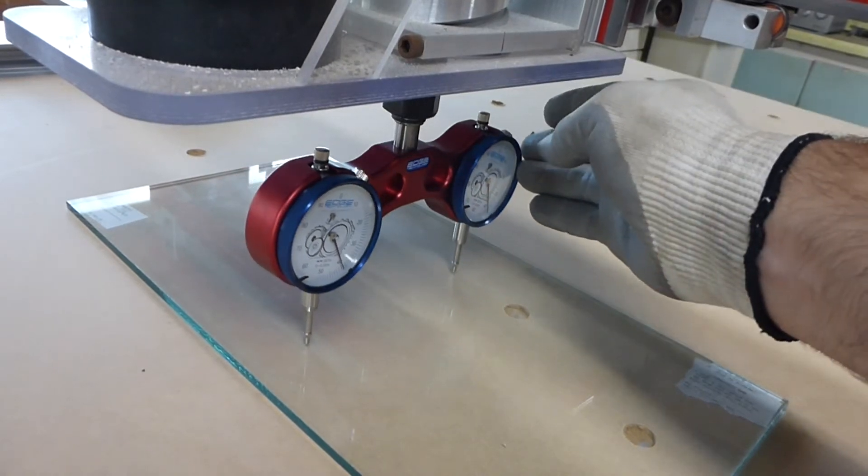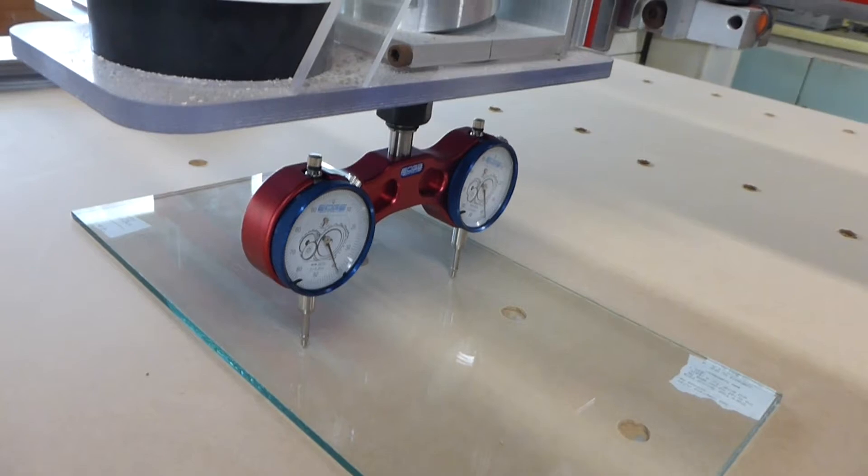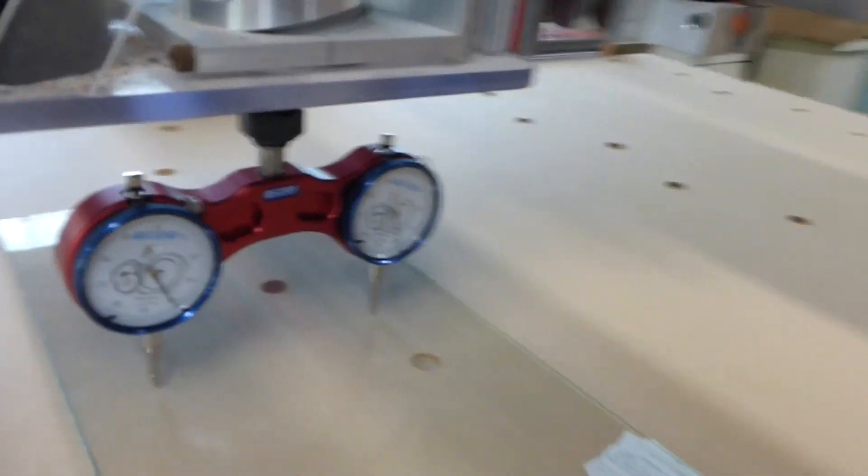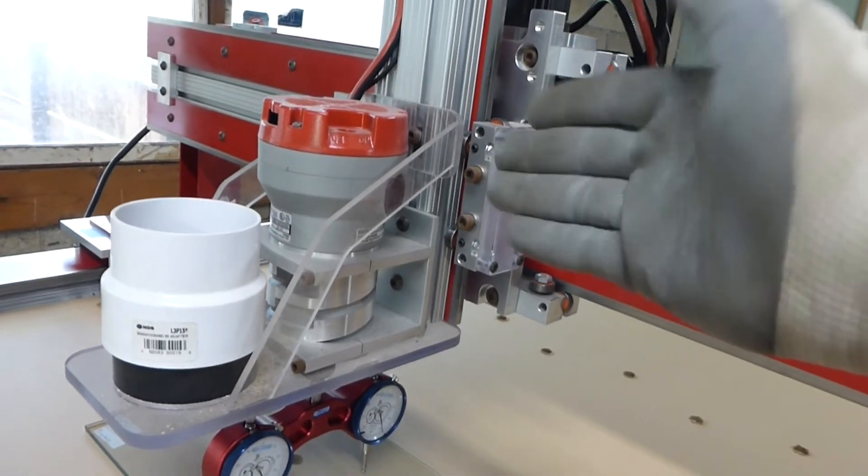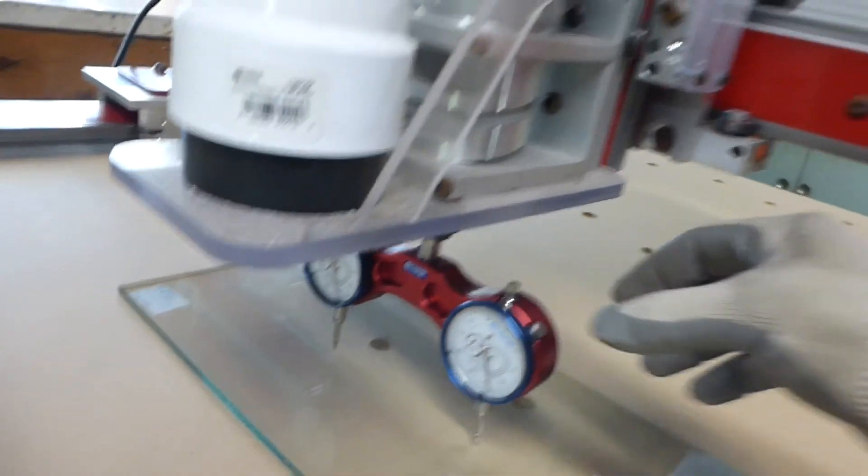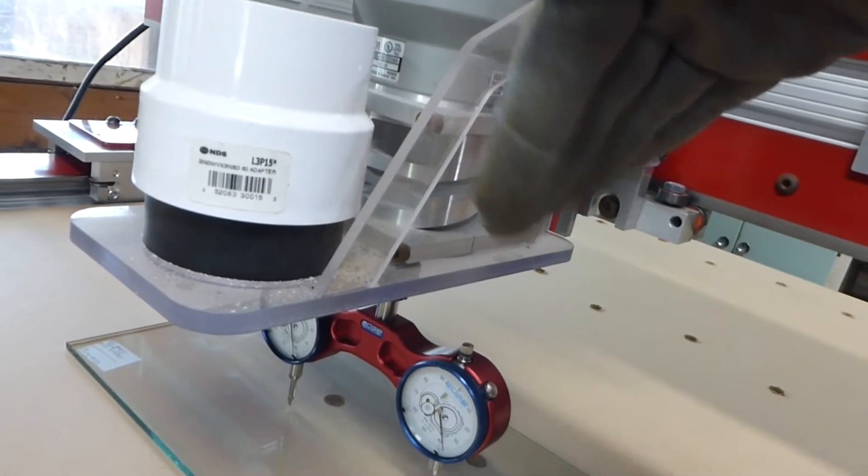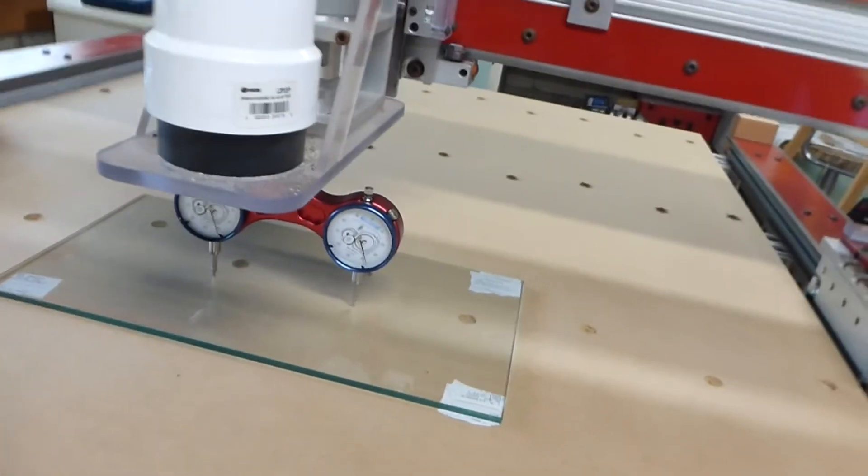Basically, once it's calibrated, you can turn it front to back there and make your adjustments to the Z axis in that direction, and then turn it that way and make your adjustments in that direction. I've already done that a little bit.